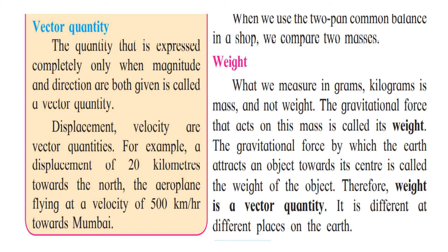For example, displacement and velocity are vector quantities. A displacement of 20 kilometers towards the north — here 20 kilometers is the length and north is the direction. The aeroplane flying at a velocity of 500 kilometers per hour towards Mumbai — here we have the magnitude and the direction. So those quantities are called vector quantities.